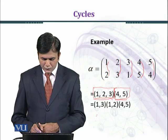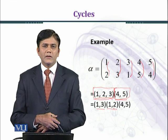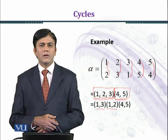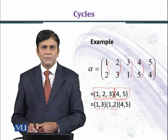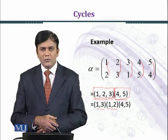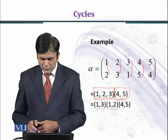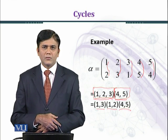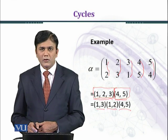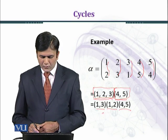In this manner, first we take the transposition (1, 3) and then we multiply it by (1, 2). As you know, a permutation is a function and we operate from right to left. That is why we place (1, 2) on the right side and (1, 3) on the left. If you multiply these transpositions you get the value of alpha, and the third cycle gives the transposition (4, 5) as it is. Multiplying (1, 3) with (1, 2) from right to left gives us the cycle (1, 2, 3).